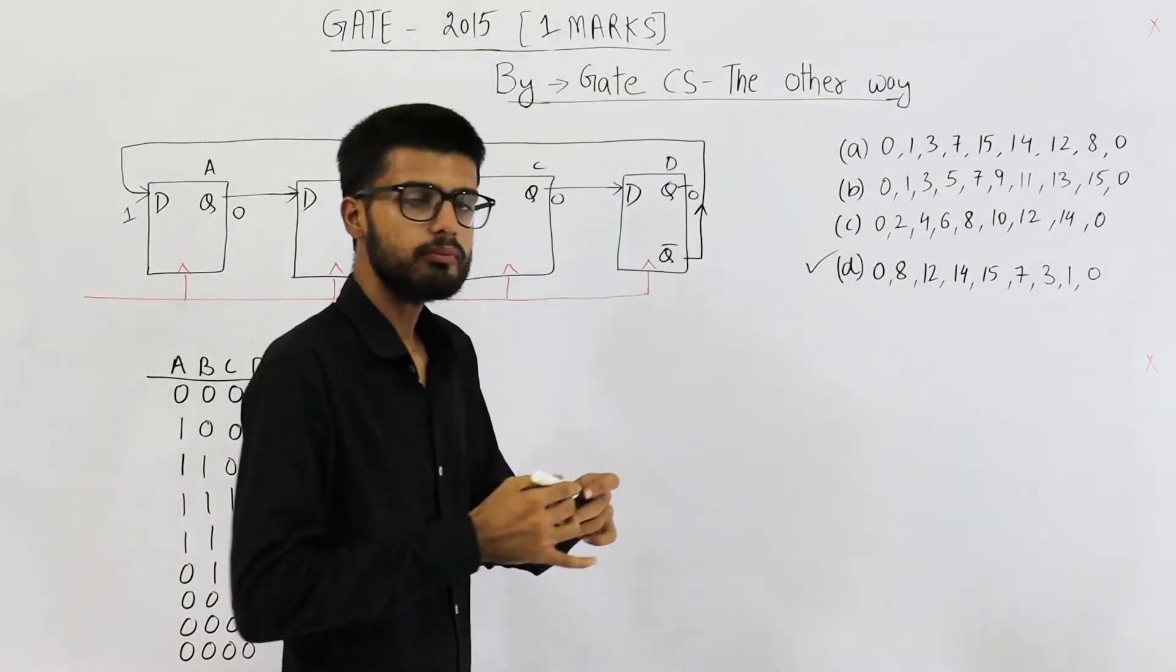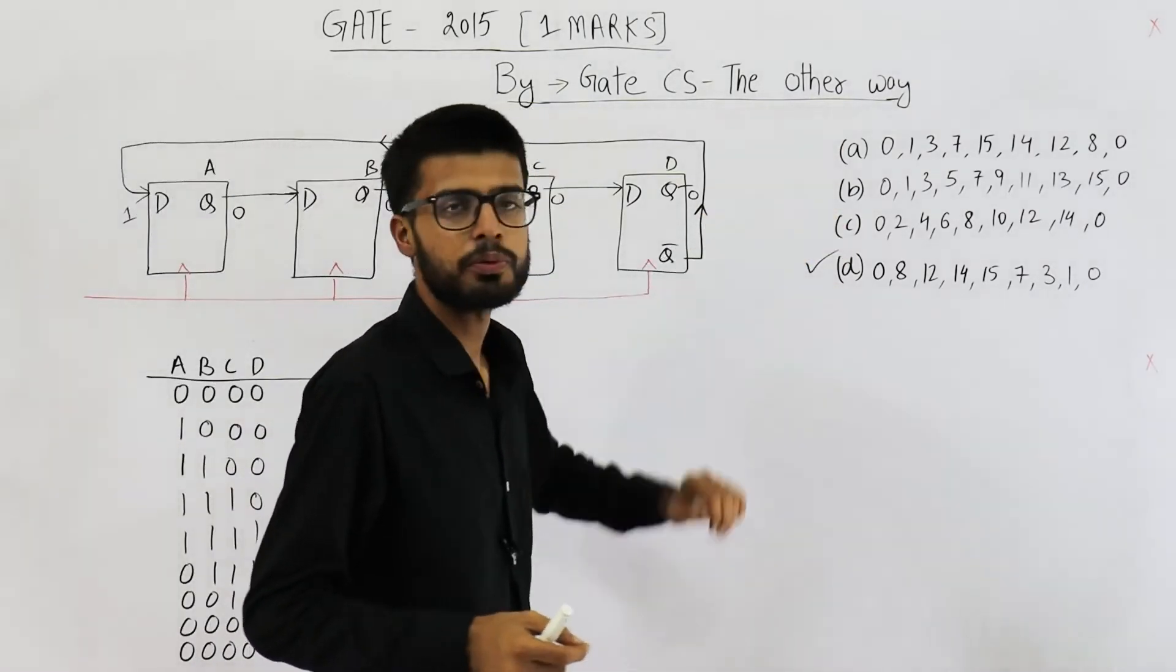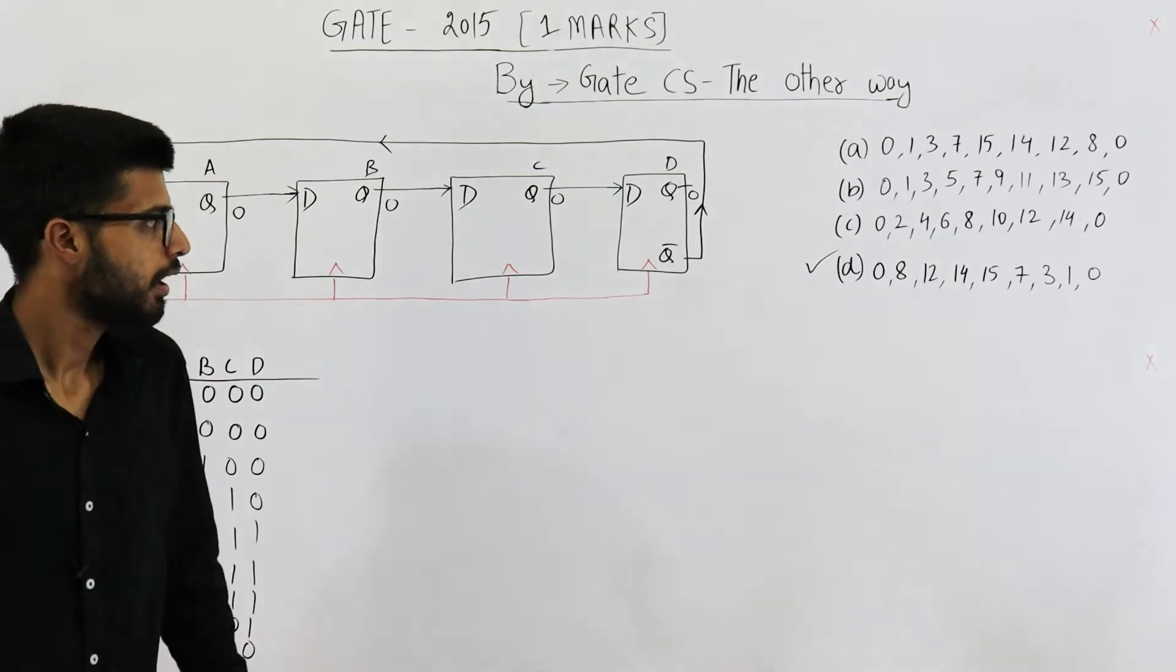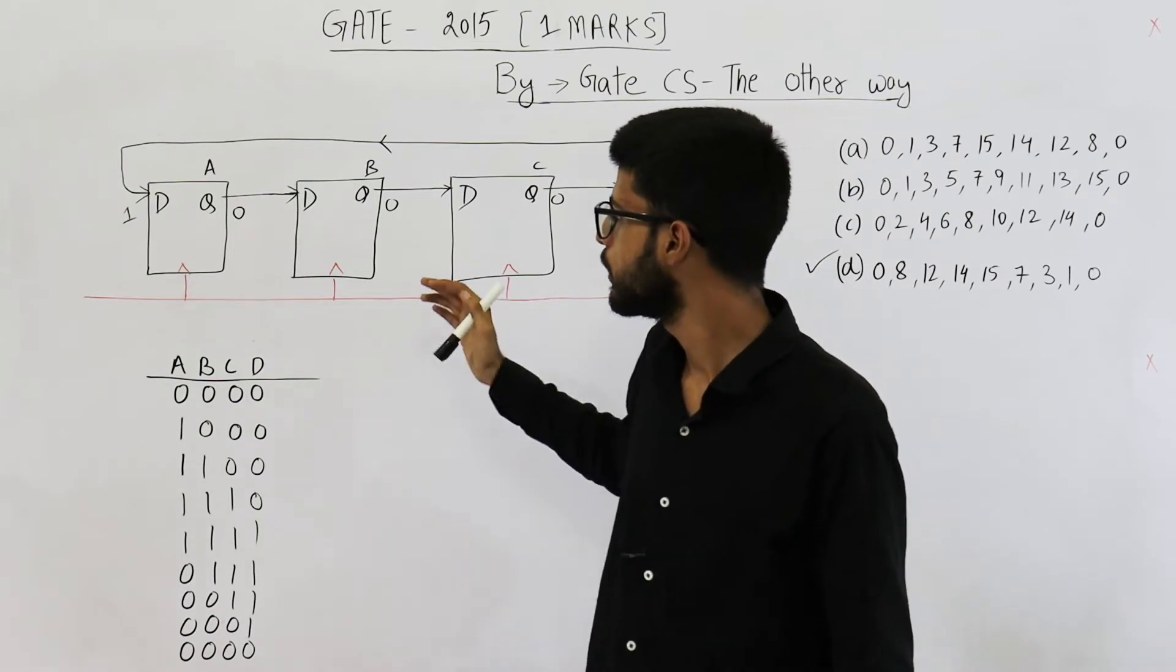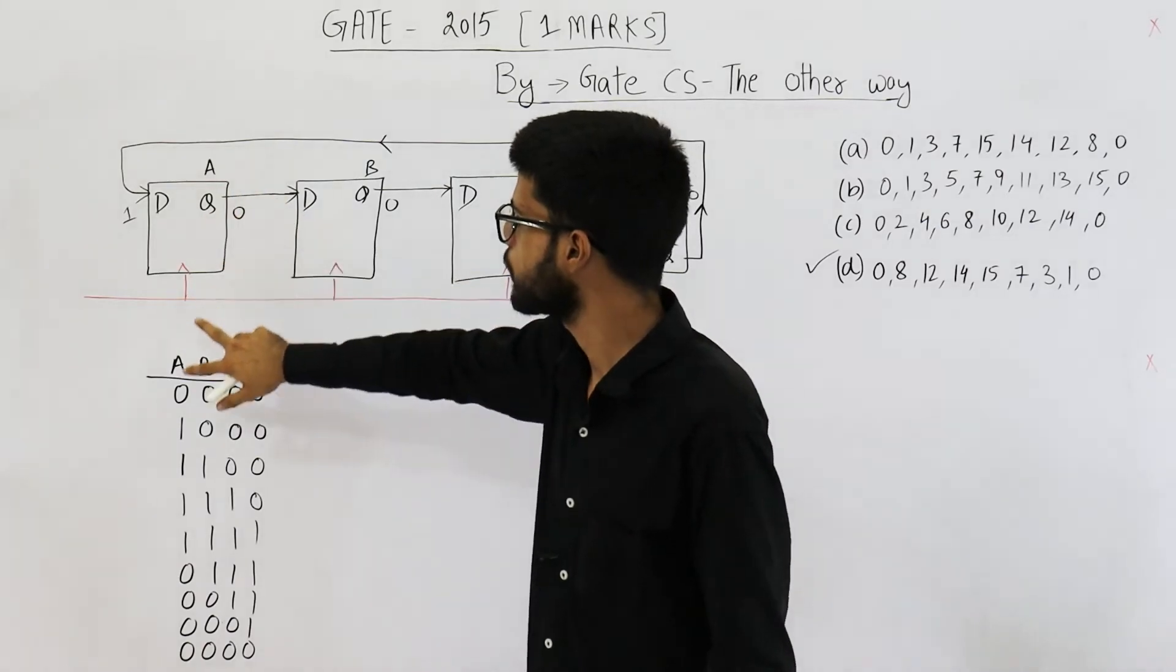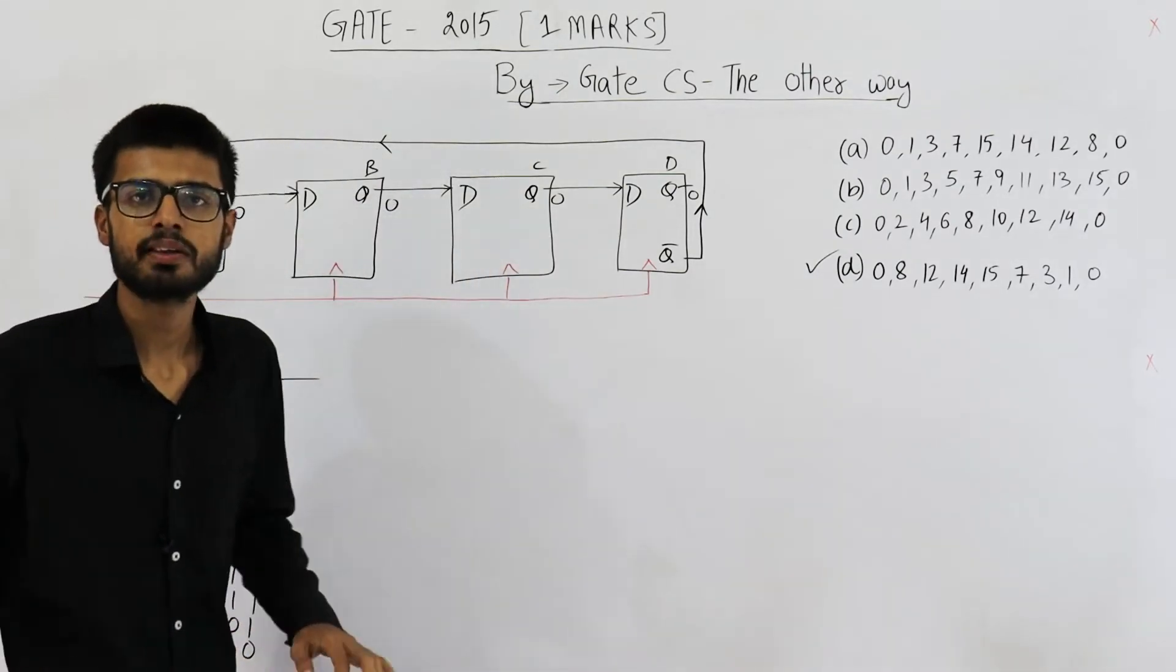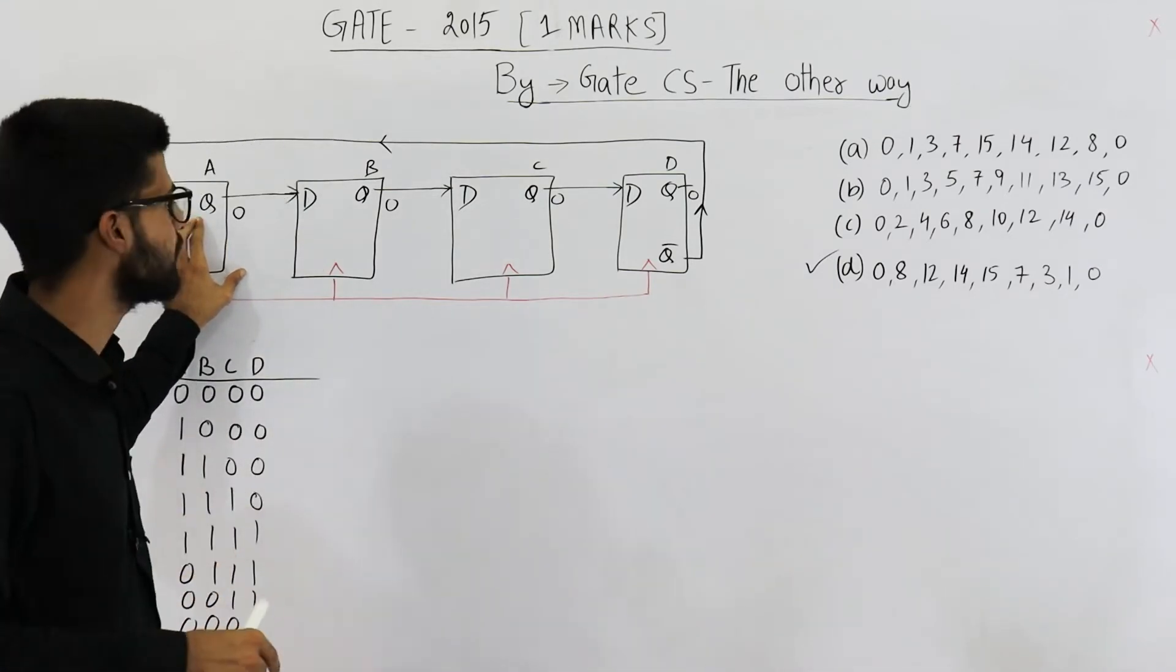But option A is also correct. Most of the students don't get this point. How is option A correct? See, some of the students on some online discussion forum and also some of the students in offline classes give reference of books. They say, in theory, in some books, it said that this is MSB and this one is LSB.